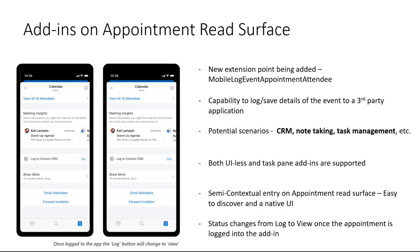Here you see you get a very contextual card where you can just click on log. Once you click on log, the log button changes to view. The add-in can really define how the experience should look like for the user. We support both UILS as well as task pane add-ins on this surface. So either it could be just a one-tap experience where the user taps on log and the event details are saved into the add-in, or it could be a task pane where when the user clicks on log, you open a task pane and the user can select which specific record or place they want to add the details of this event to.